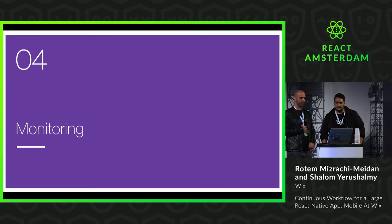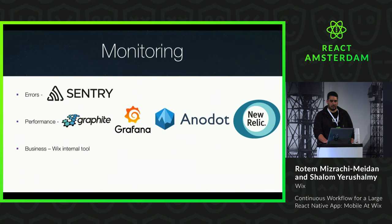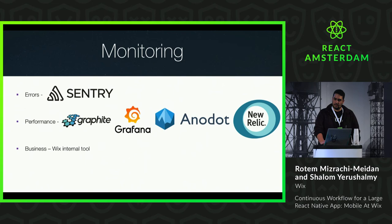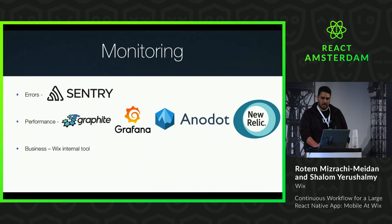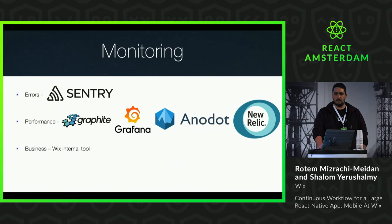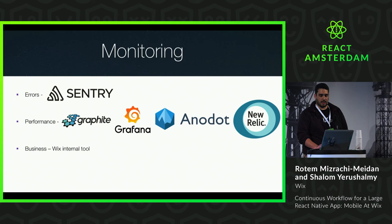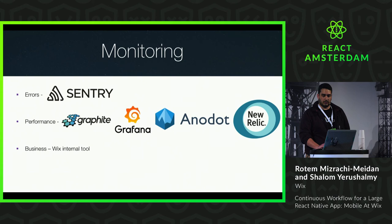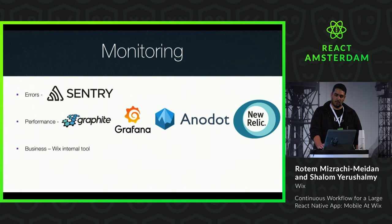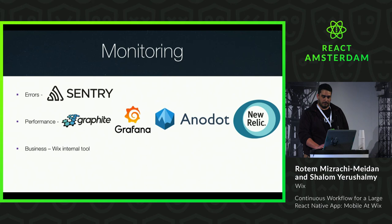They say if it's not monitored, it's not working. So what are we using for monitoring our app? We use Sentry, a cross-platform crash reporting and aggregation platform, to track JavaScript errors. For performance, we use Graphite to store app metrics — for example, response time or how long it takes to render a screen. Grafana is the UI for dashboards on top of Graphite. Anodot helps us detect anomalies on the server side. We also use New Relic for server-side dashboarding and metrics. And for business analytics, we have an internal tool developed by our BI team to monitor user flows and similar data.